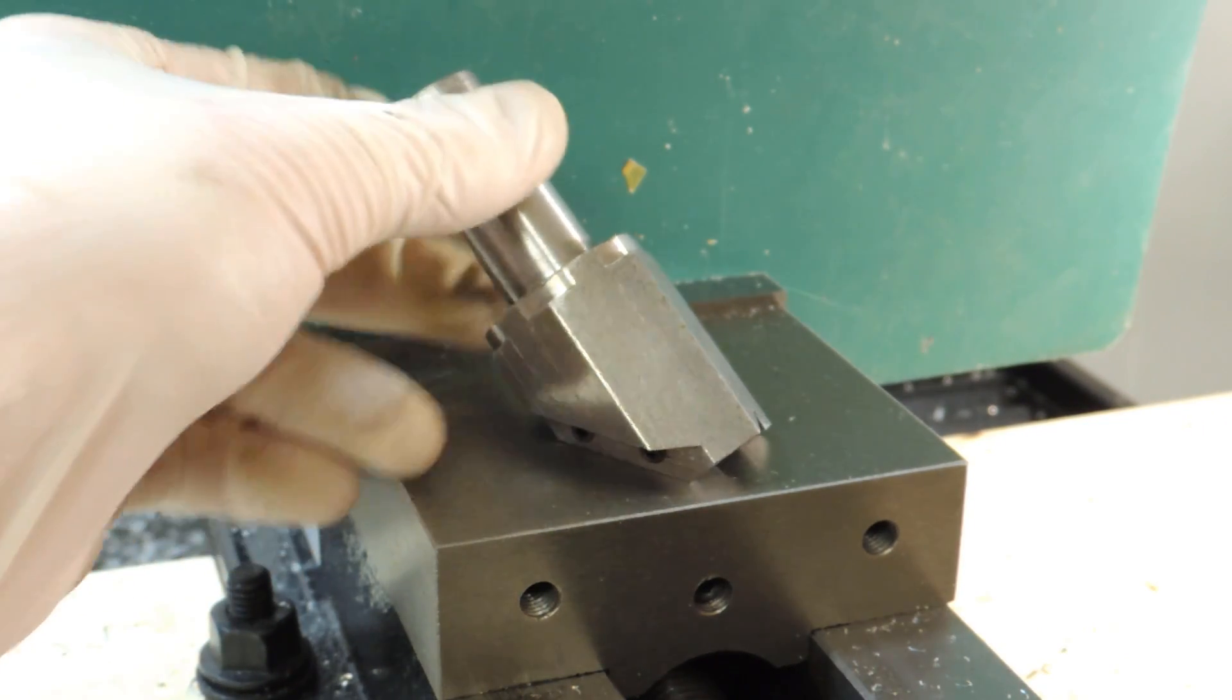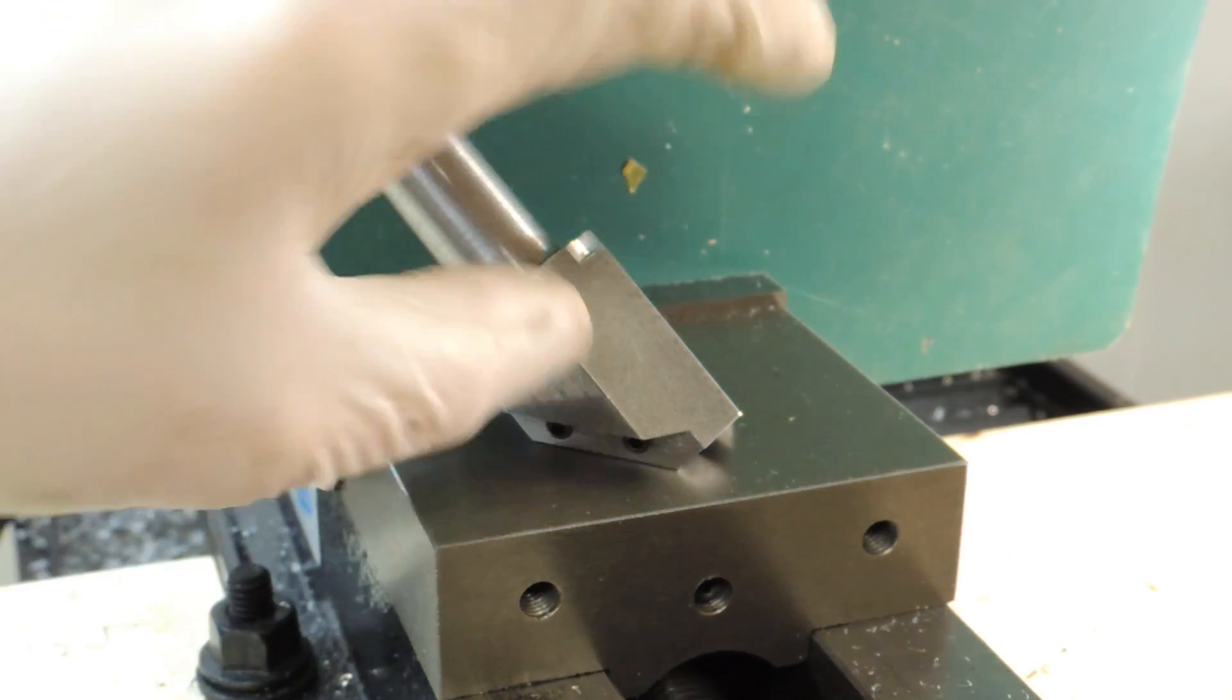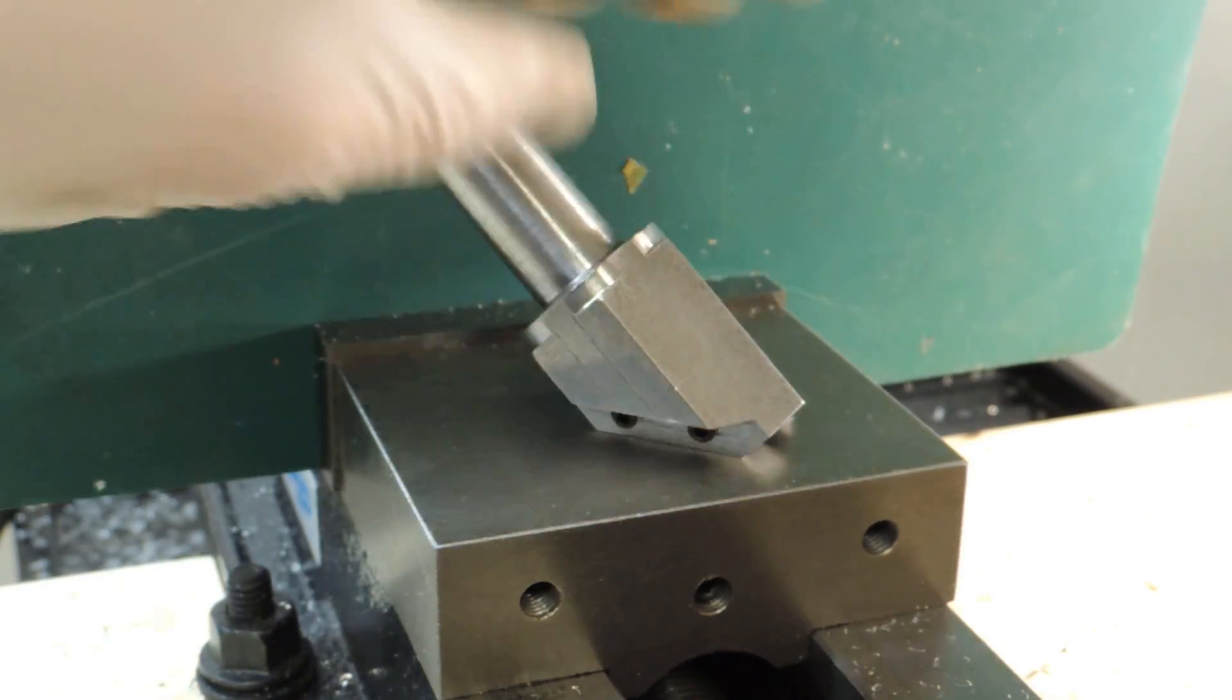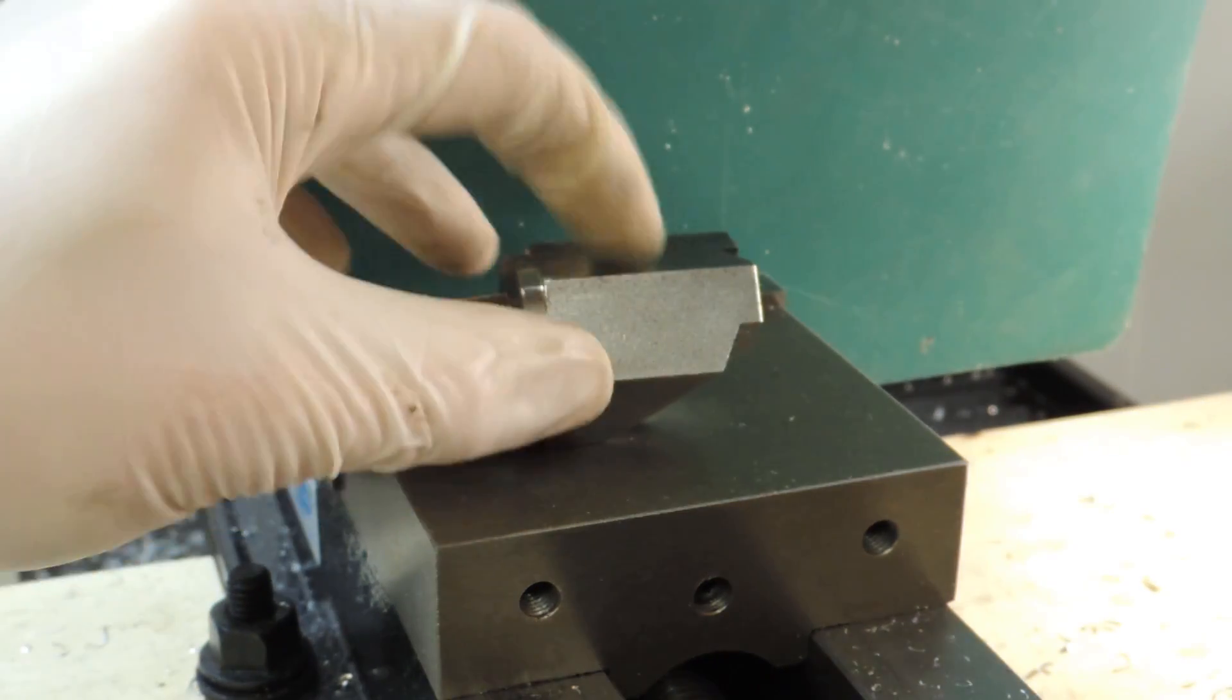What it's used for is to surface the top of a piece of metal, something like this, to get it completely flat and you do it in one pass.